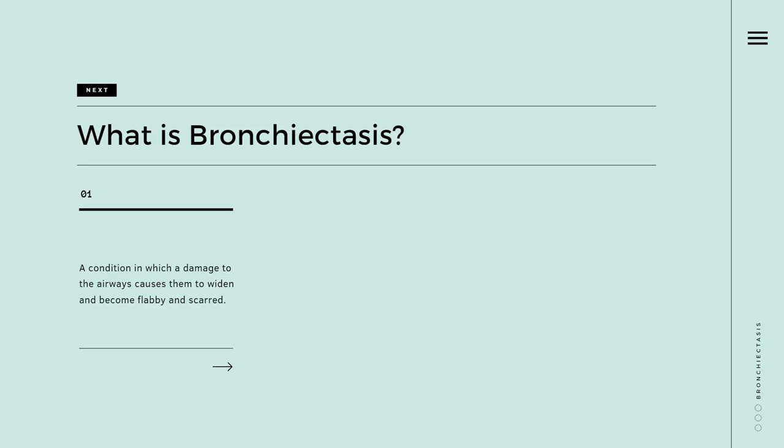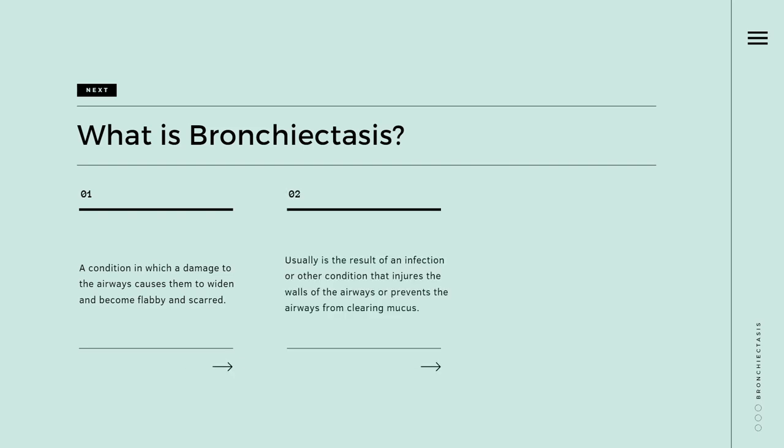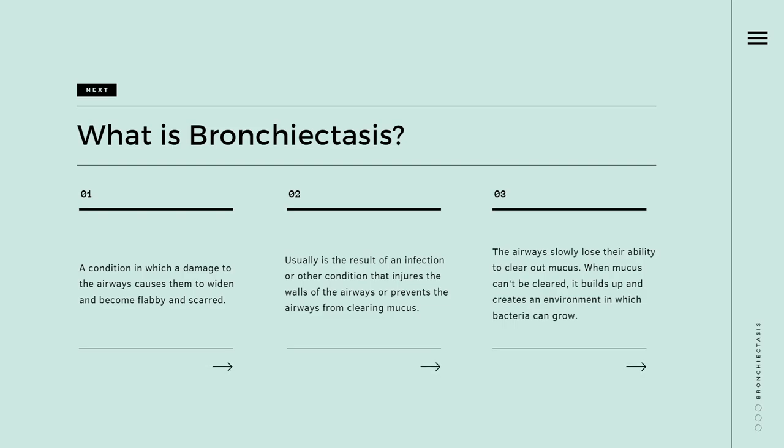It is a condition in which damage to the airways causes them to widen and become flabby and scarred. It is usually the result of an infection or other condition that injures the walls of the airways or prevents the airways from clearing mucus. Mucus is a slimy substance that the airways produce to help remove inhaled dust, bacteria, and other particles. The airways slowly lose their ability to clear out mucus, and when mucus can't be cleared, it builds up and creates an environment in which bacteria can grow. This leads to repeated serious lung infections.